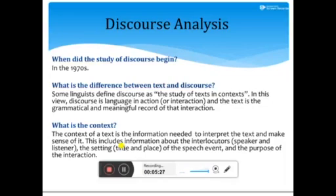What is meant by context? The context of the text is the information needed to interpret the text and make sense of it. This includes information about the interlocutors — the speaker and listener — the setting, the time and place of the speech event, and the purpose of the interaction.